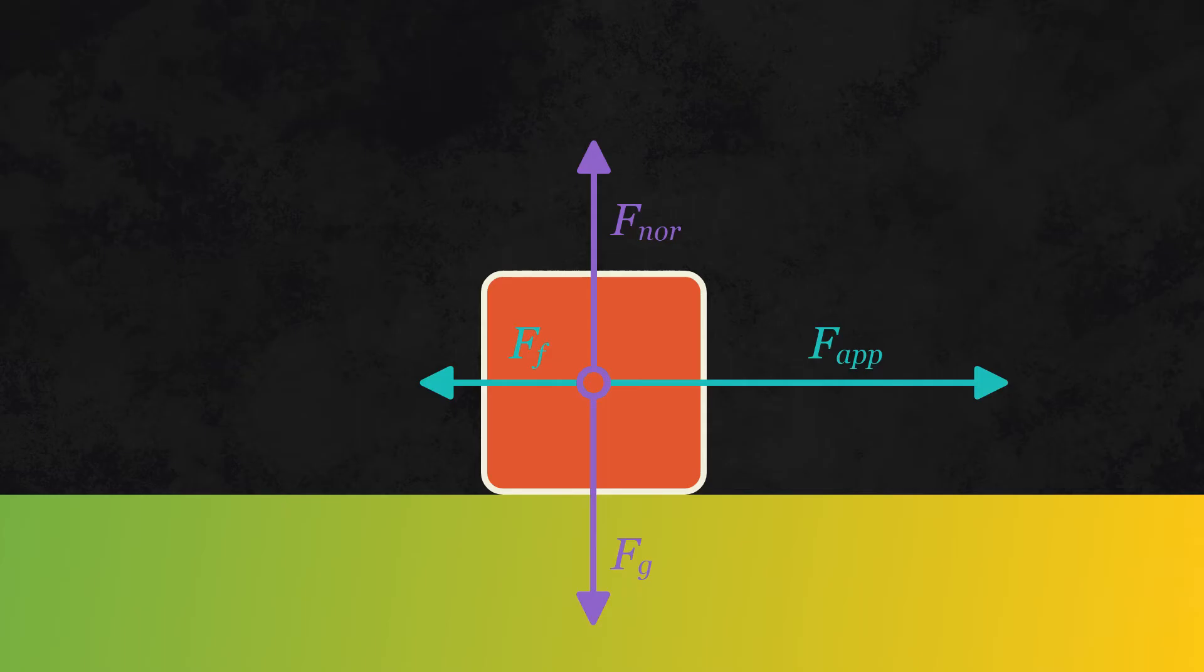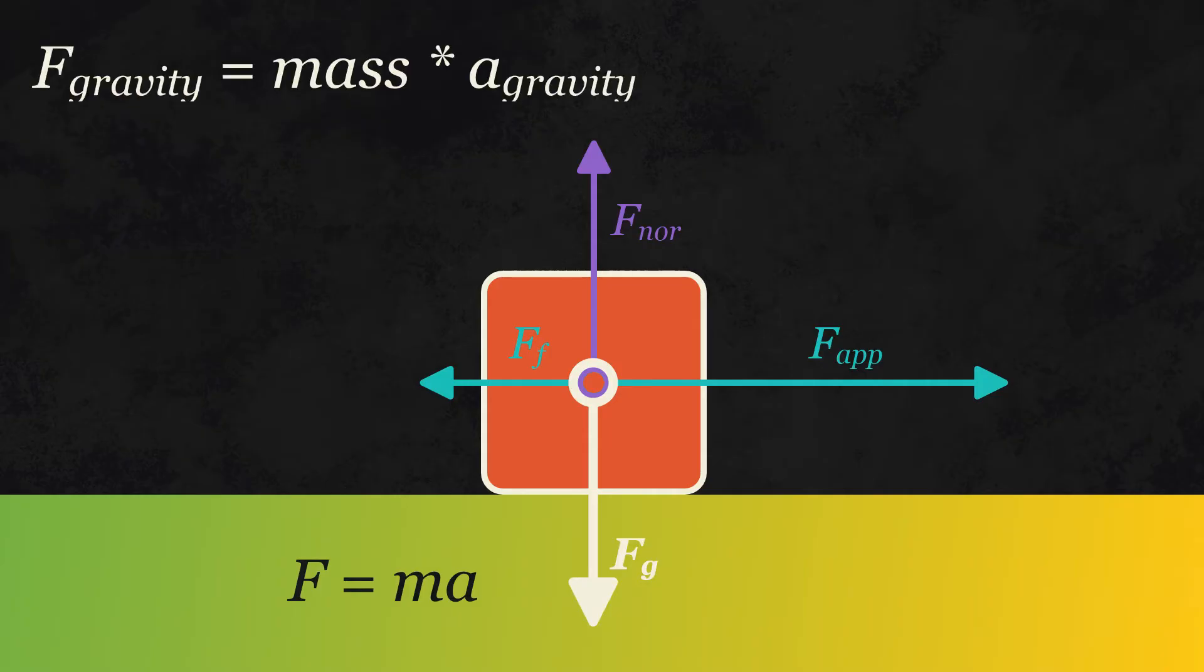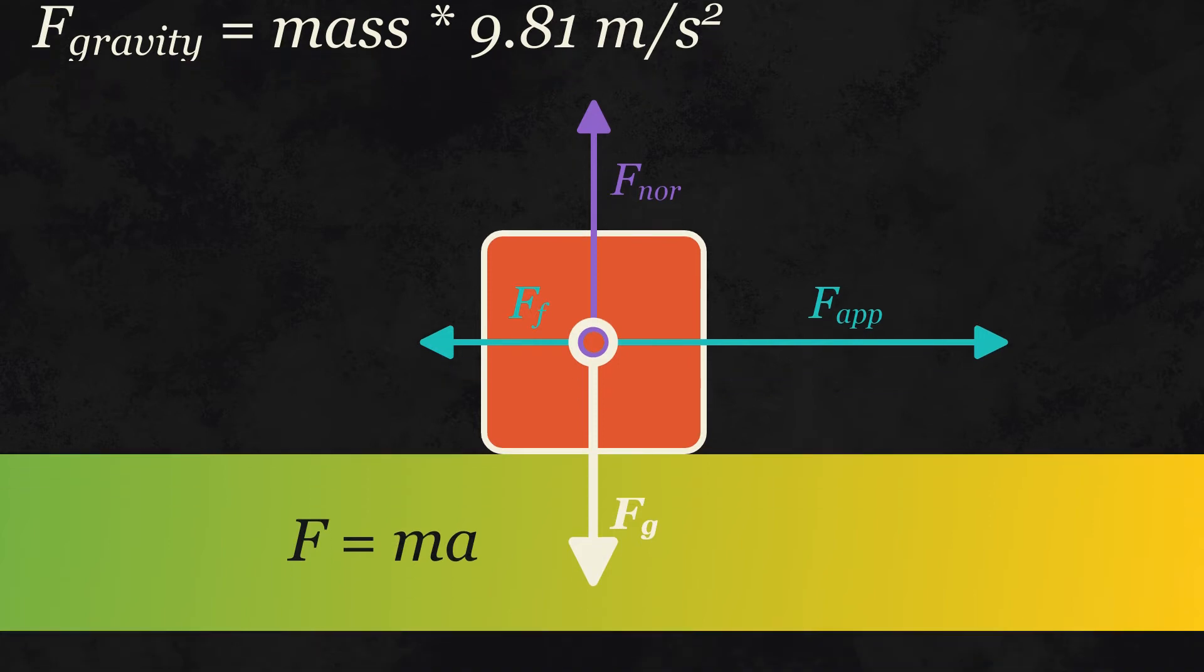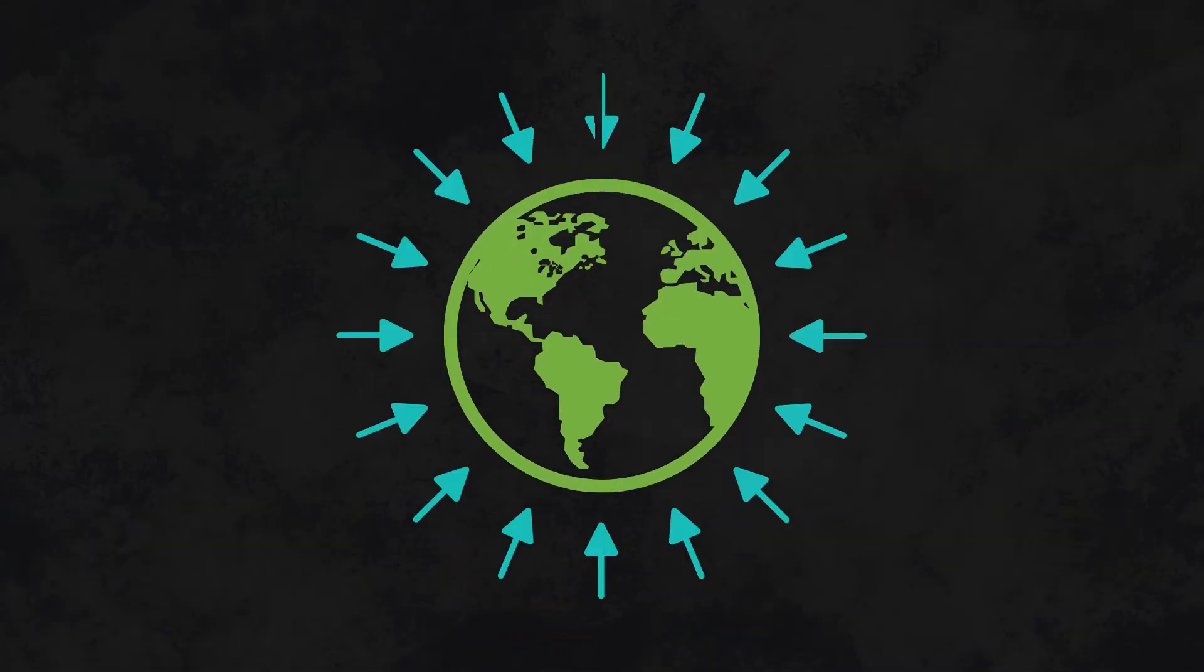For example, the force of gravity. Because F equals ma, the force of gravity upon an object is equal to that object's mass times the gravitational acceleration on earth, which is 9.81 meters per second squared. If your physics problem is taking place on earth, you will need a force due to gravity.